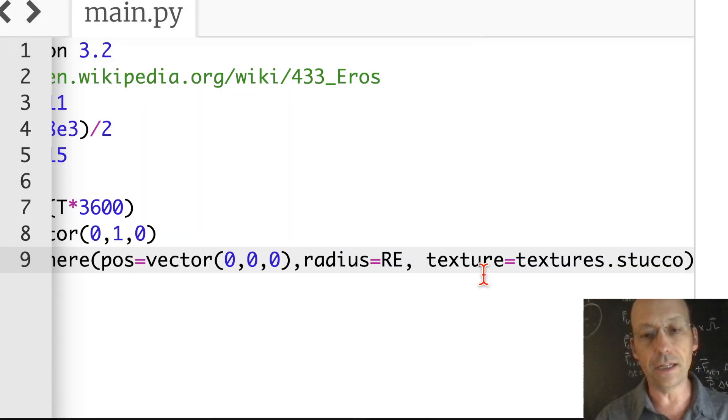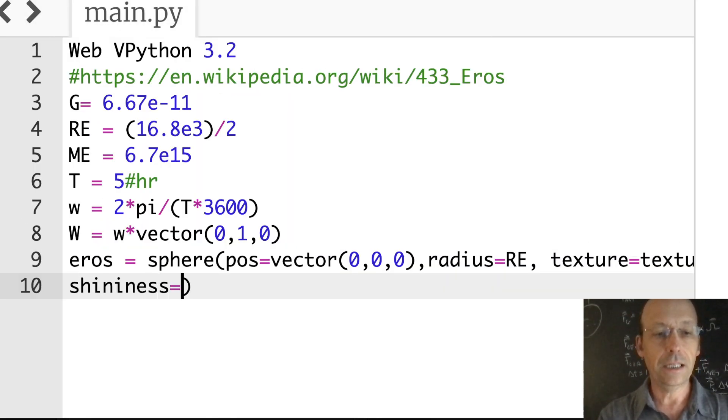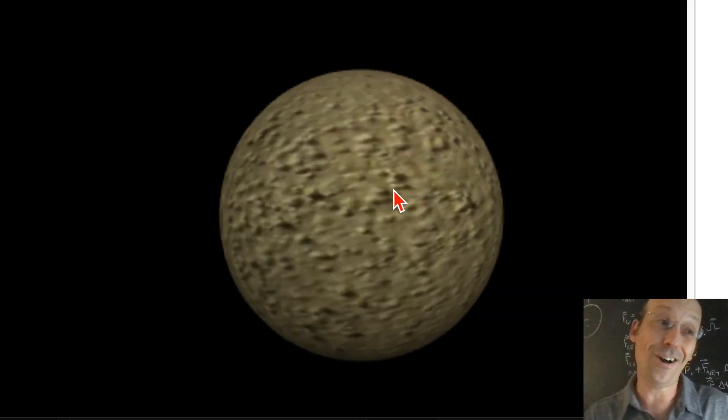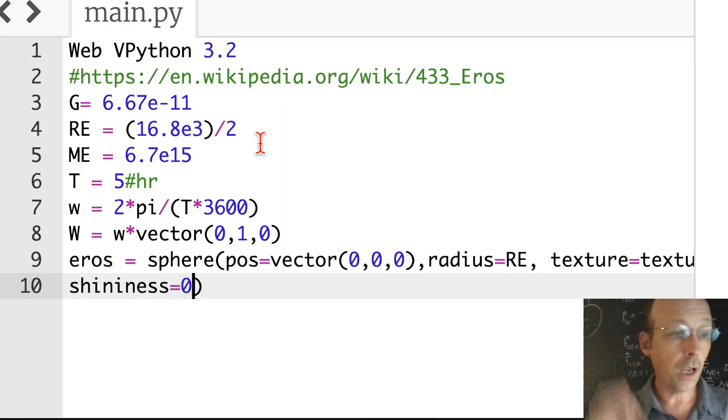Let's do this too. Shininess equals zero, so it's not shiny. I mean, it's stucco, but it looks like a moon. Good enough for me. There are other ways you could show it rotating, but if you just have a plain solid sphere that's the default white color, you can't see that it rotates. So we want to rotate it.